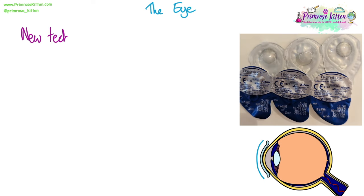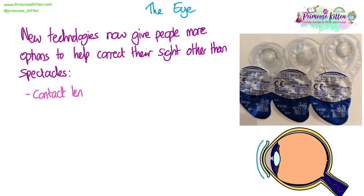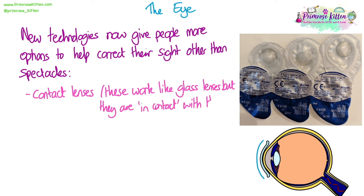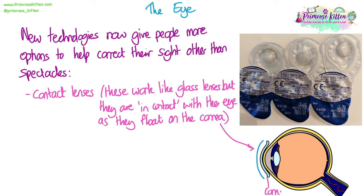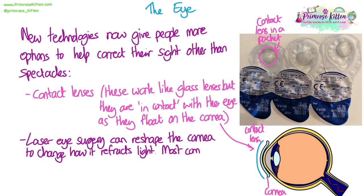There are new technologies that give people more options to correct their sight other than spectacles. Contact lenses work like glass lenses but are in contact with the eye — that's how they get their name. They actually float just on top of the cornea on the liquid on the front of your eye. They're kept moist and flexible in liquid in the packet, and you can obviously remove and dispose of them. Some people find they dry out if worn for a long time, and there are many different types available.